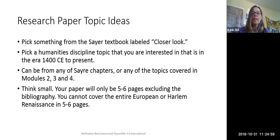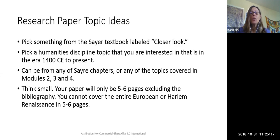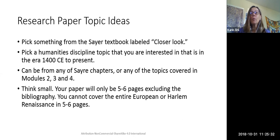You can take your topics from any of the Sayer textbook chapters or any of the topics covered in modules two, three, and four, which are before we started using the Sayer textbook. I want you to think small — your paper will only be five to six pages excluding the bibliography. You cannot cover the entire European or even the entire Harlem Renaissance in five to six pages. Normally the feedback I'll be giving is that the average person's topic is too big.